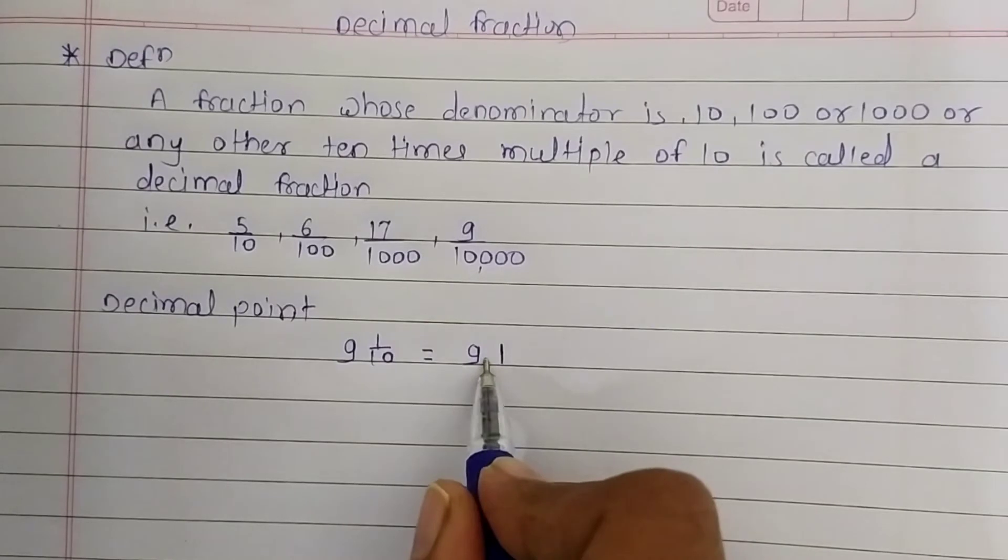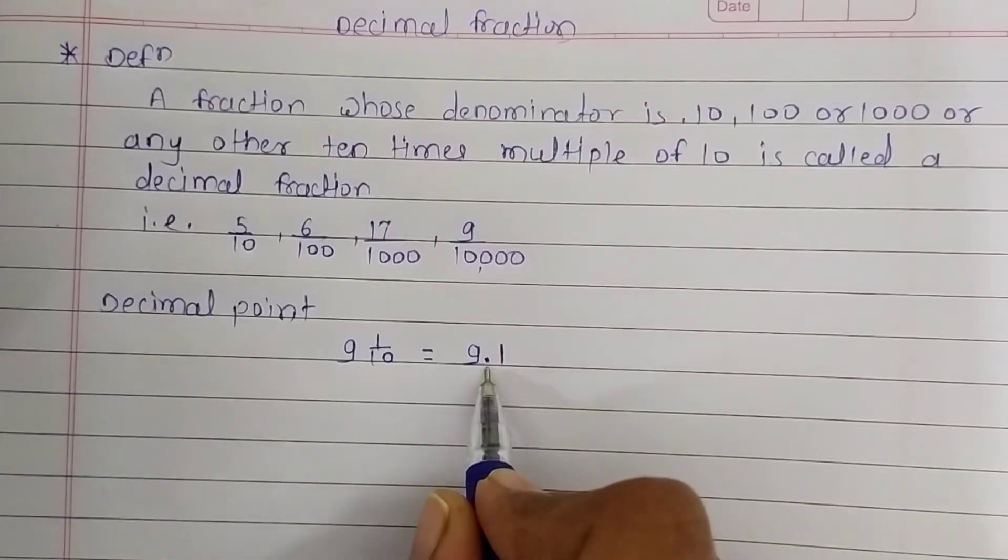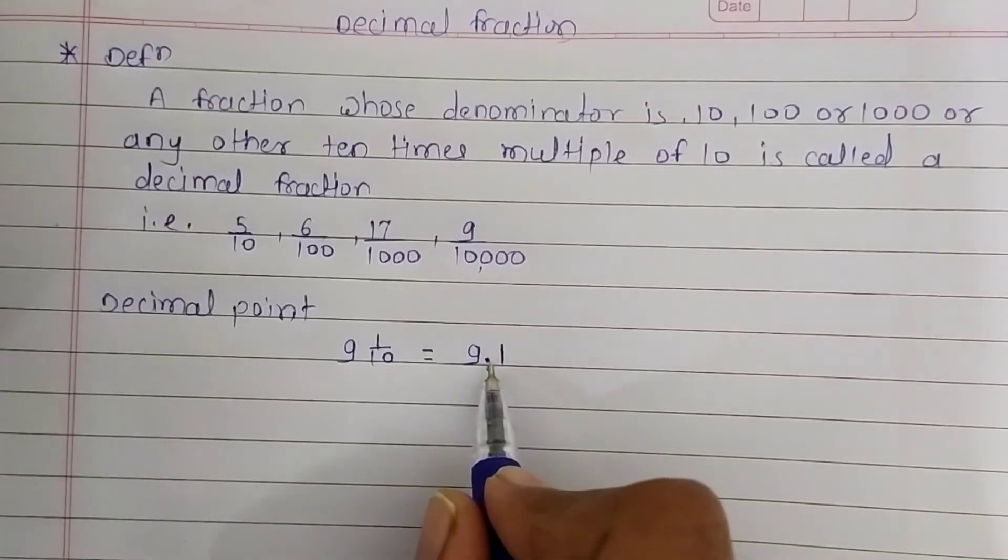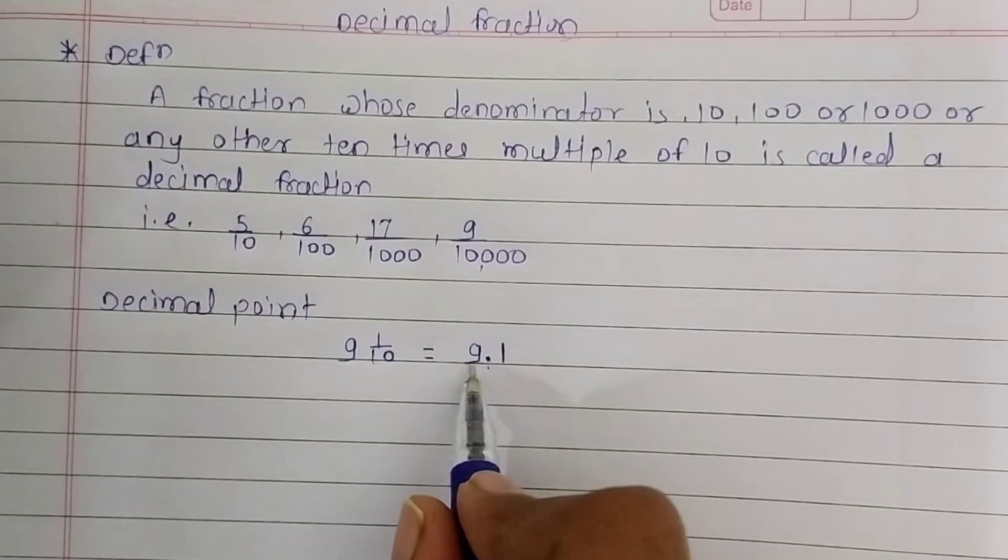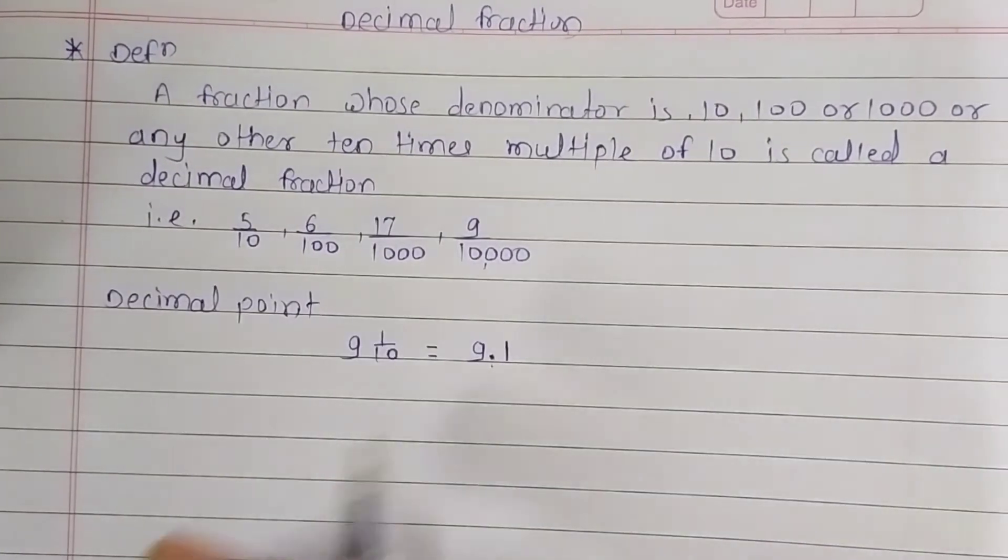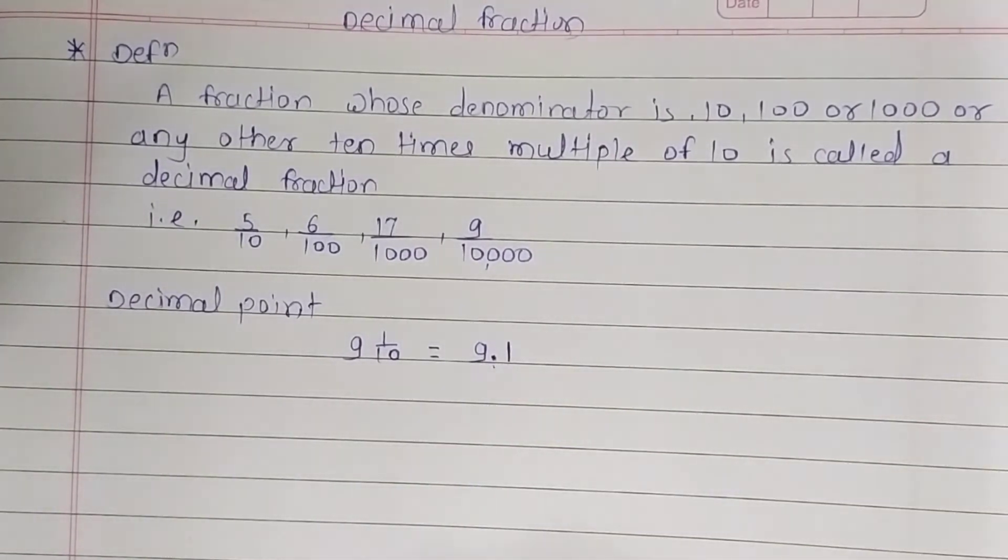You can see here a dot. This dot is called a point. This dot is known as a point. So here, 9 is the whole part of that number and 0.1 is the fraction of that number. We see this type of fractions on medicine boxes or when we buy a product.